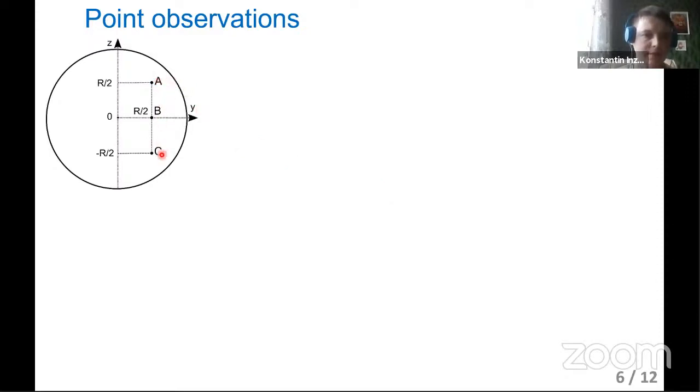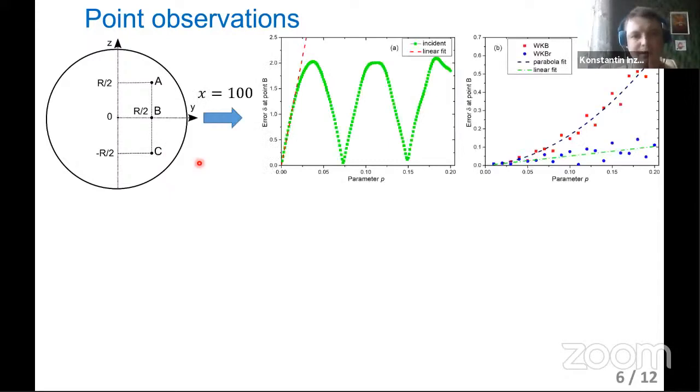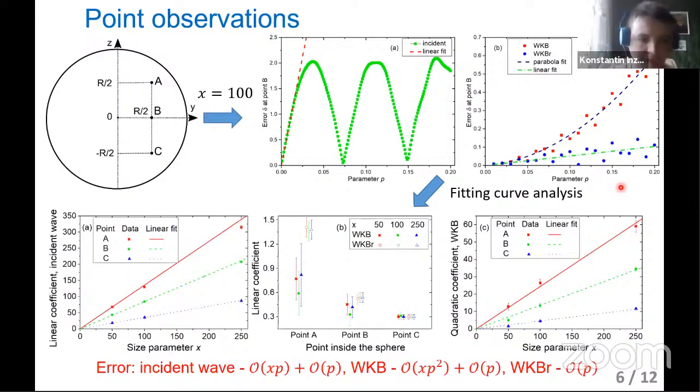We compared different approximations with exact solution. You can see the results for three points A, B, C for different sizes. Here you can see results for x=100, results for incident approximation, for WKB, and WKB with refraction. Then we conducted a fitting curve analysis. The main conclusion is that we found what is the error and what is the form for different approximations. It is interesting that WKB-R approximation error doesn't depend on the size parameter.